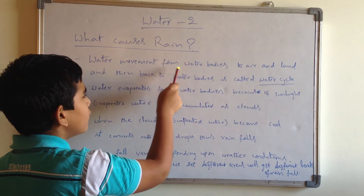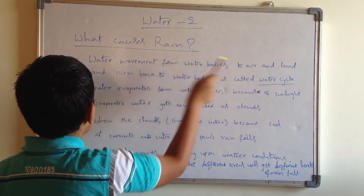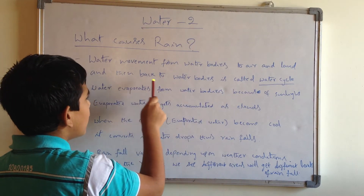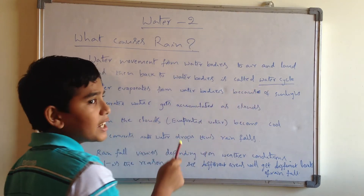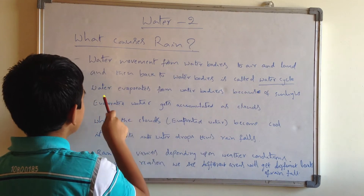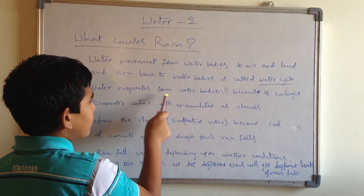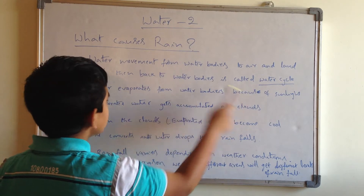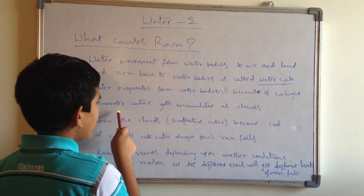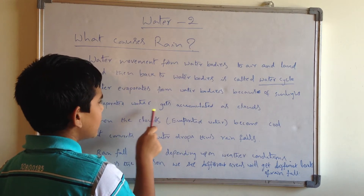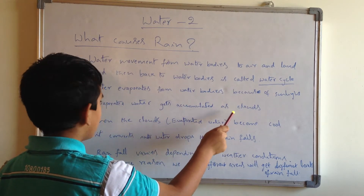Water movement from water bodies to air and land and then back to water bodies is called water cycle. Water evaporates from water bodies because of sunlight. Evaporated water gets accumulated as clouds.